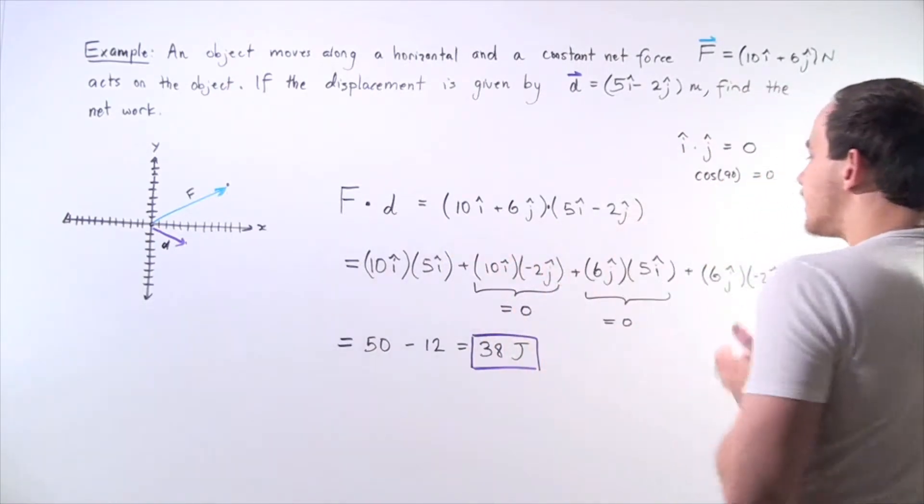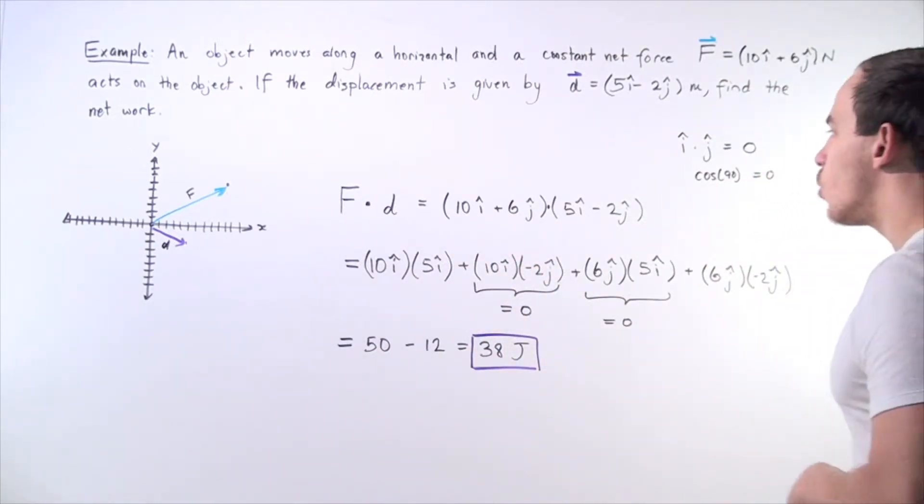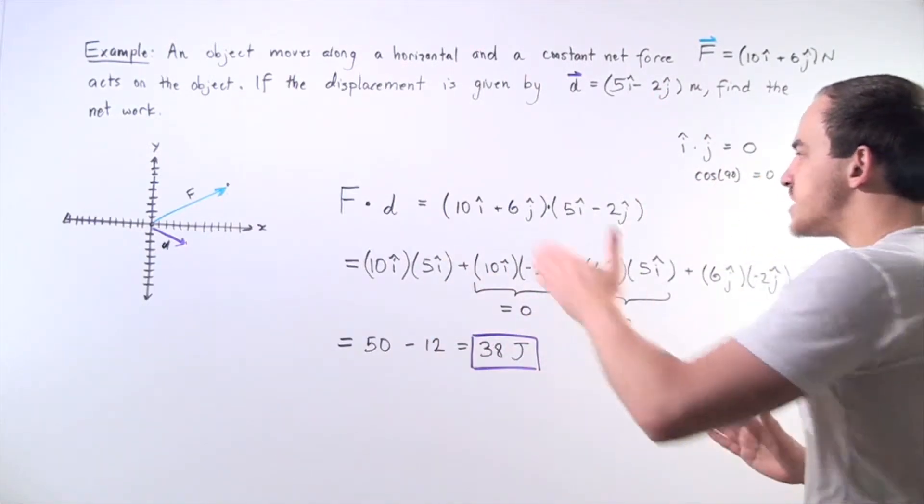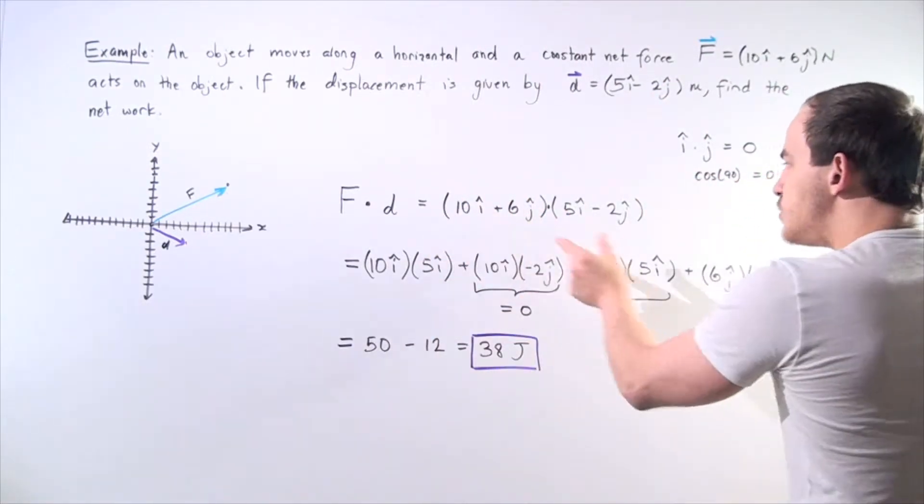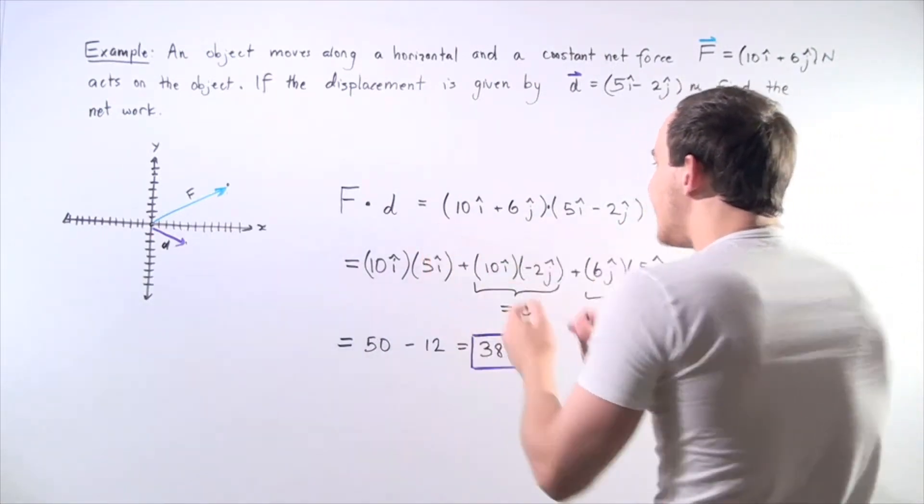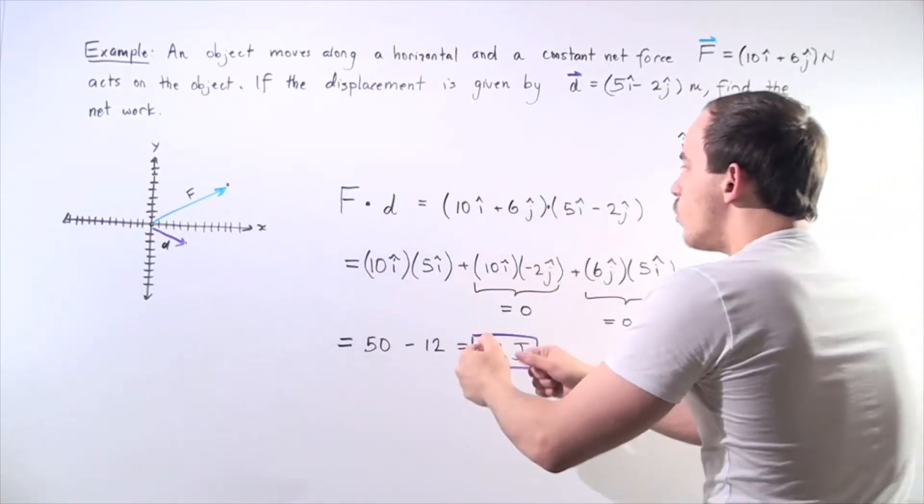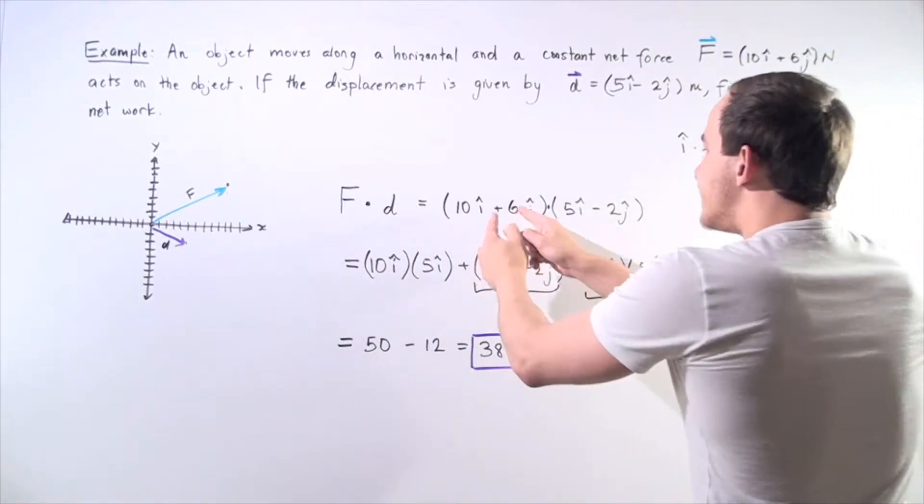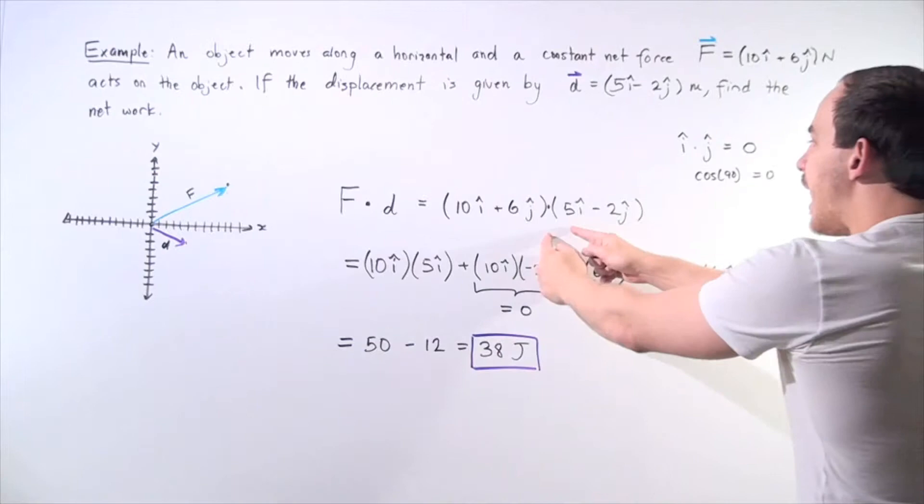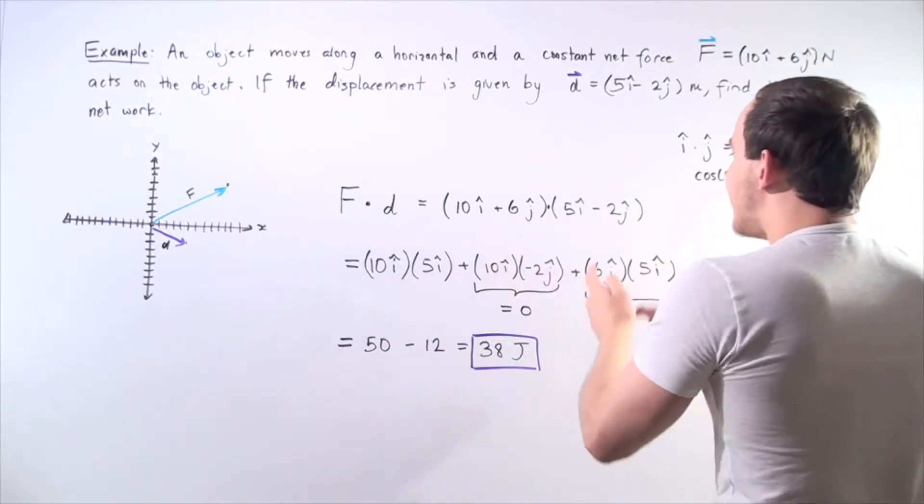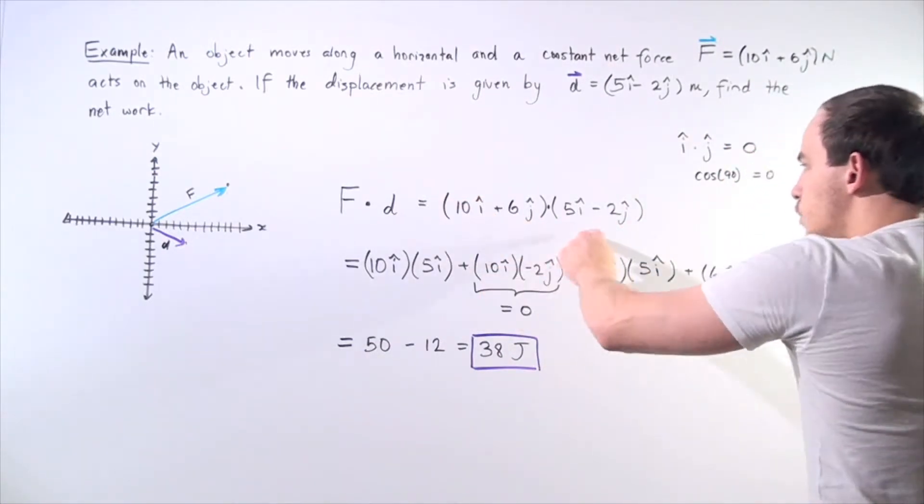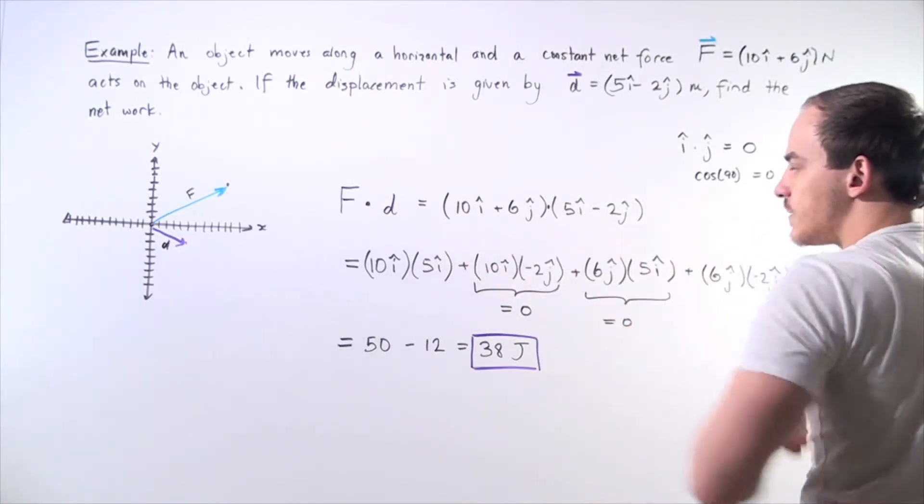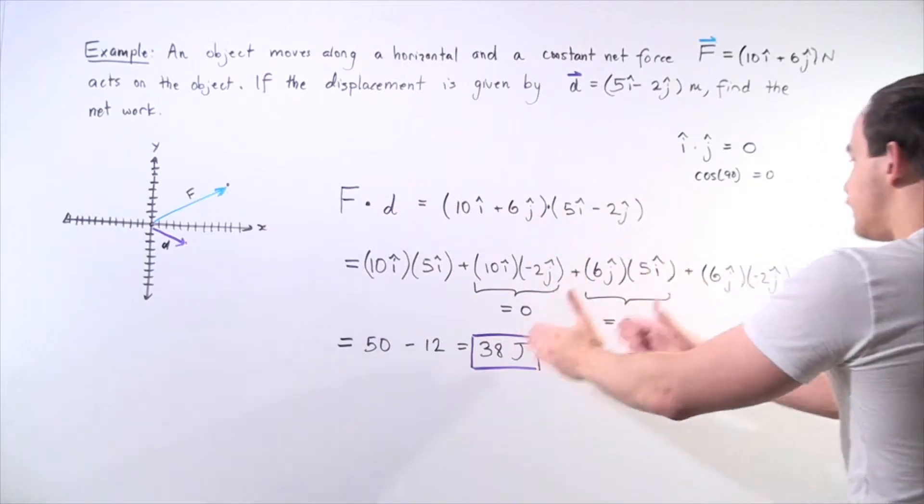So we have the force dot product displacement. To evaluate the dot product we essentially have to sum up all the individual dot products. So we have 10i dot product 5i, we have 10i dot product negative 2j, we have 6j dot product 5i and 6j dot product negative 2j. So we distribute it in the same way that we would multiply these numbers out. So we get four different values.